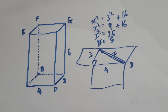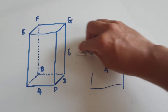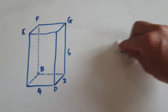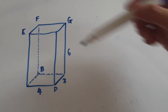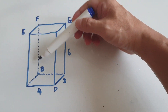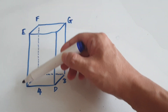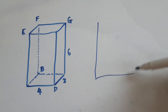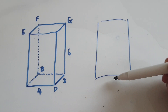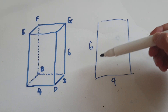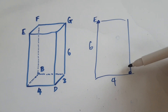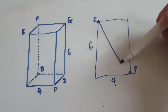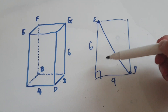So the next one — if you want to find ED. E is here and D is here, so we're trying to find this diagonal length here. If you look at the big face, this is 4, the height is 6. This is E here and this is D here. You're trying to find this length here — use Pythagoras again.